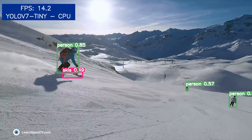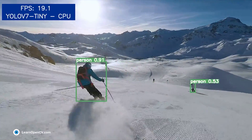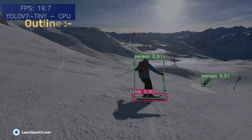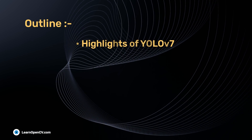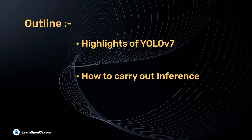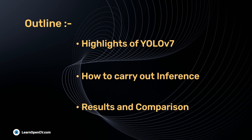YOLO v7 is a fast and accurate object detection model. In this video, we will discuss the highlights of YOLO v7, how to carry out inference, and compare the results.